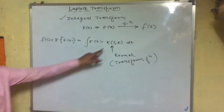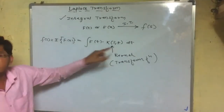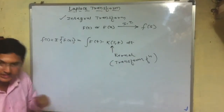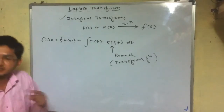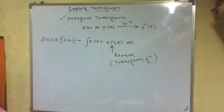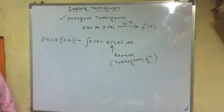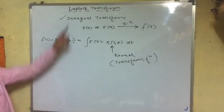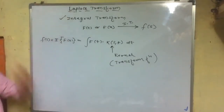By changing the kernel, we may get Fourier transform, Fourier cosine transform, Fourier sine transform, Mellin's transform, Z transform. Some of these we will discuss, but we are supposed to discuss only Laplace transform here.